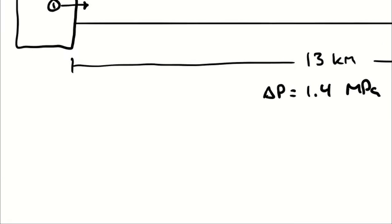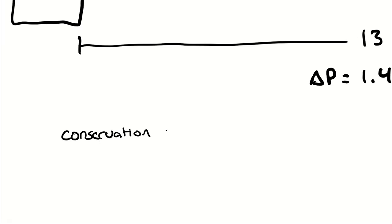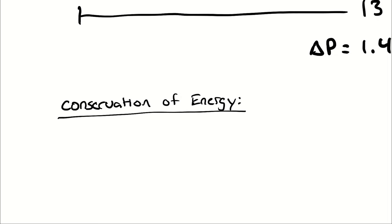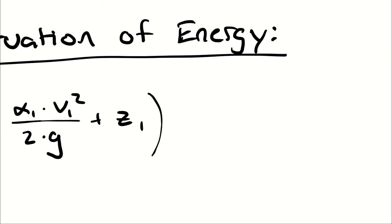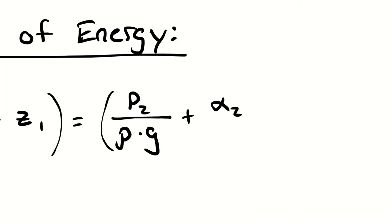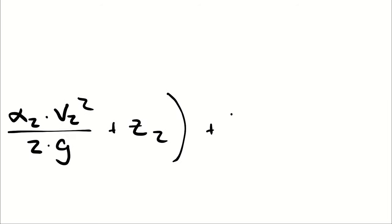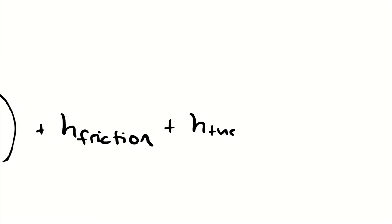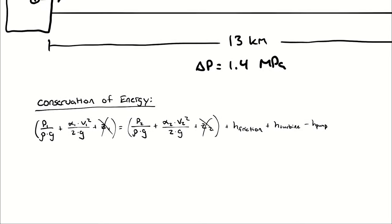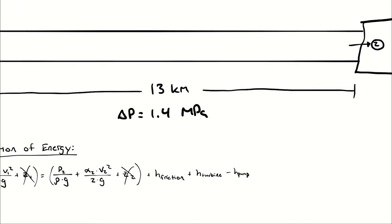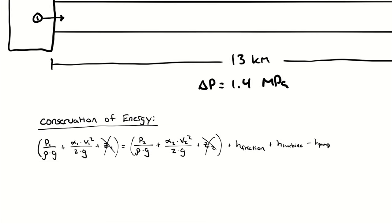Setting up a conservation of energy equation between State 1 and State 2, then eliminating terms that aren't relevant. Because the pipe is horizontal, Z1 and Z2 are the same. The pipe has a constant diameter and a steady mass flow rate.